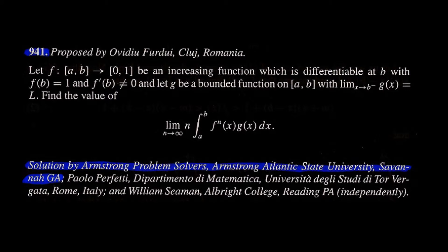Our calculation shows that the definite integral is in fact asymptotic to a constant multiple of the sequence 1 over n. And that constant is L over the derivative of f at b, which is the answer to this problem.